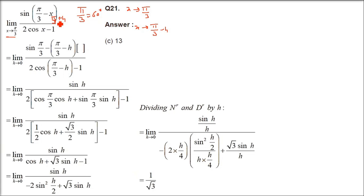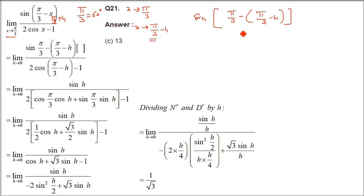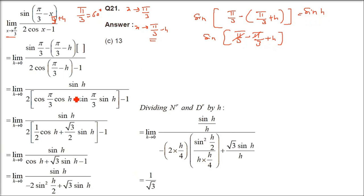So we need to solve the problem efficiently — observation and experience make us better. Writing x as π/3 minus h, the numerator becomes: sin(π/3 minus (π/3 minus h)) which simplifies to sin(h). So simply sin h will come in the numerator.